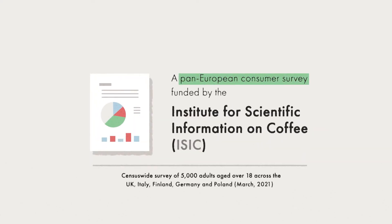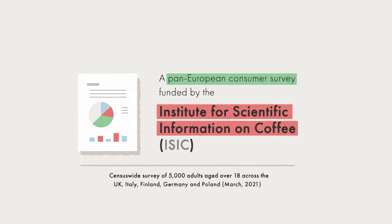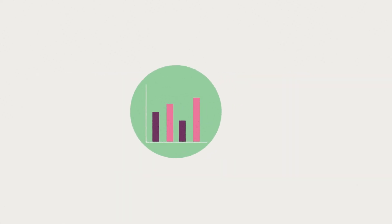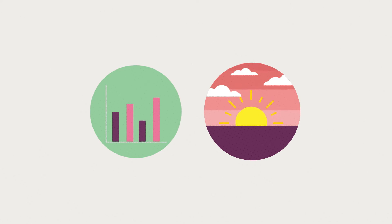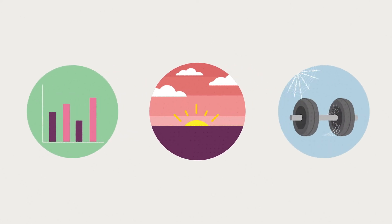A pan-European consumer survey, funded by the Institute for Scientific Information on Coffee, found that over a quarter of people say that their depression levels increase when hours of daylight get shorter, and around the same number also say their motivation to exercise worsens for the same reason.